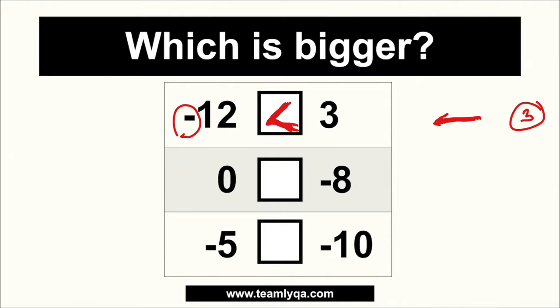Now, ito naman. Ano ang mas malaki? Zero o negative 8? This is where you have to retrain your brain. Kasi ang idea natin sometimes, kapag malaki yung number, anything that is not zero is bigger. But when it comes to this, pag negative siya, ano bang mas maganda? Sino ang mas mapera? Yung walang utang o yung may utang na 8? Syempre, ang mas mapera yung walang utang. So zero is actually greater than negative 8.